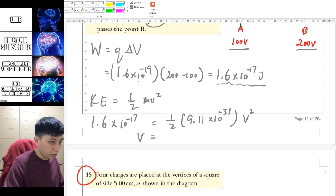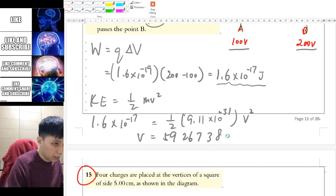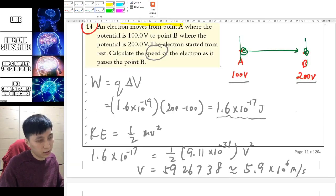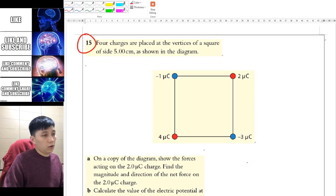With only one unknown, you can find the answer. Eventually you should find 5.9 times 10 to the power of 6 meters per second, because everything else is in SI units.